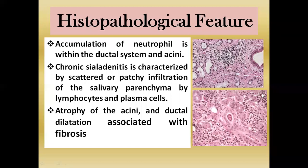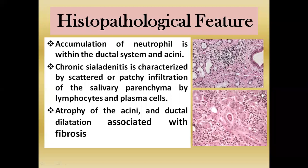Chronic inflammation is characterized by scattered or patchy infiltration of chronic inflammatory cells, primarily lymphocytes and plasma cells. Microscopically, there is deposition of fibrous connective tissue inside the salivary gland, atrophy of the acini (SNI), and ductal dilatation associated with fibrosis — all characteristic features of chronic salivary adenitis.